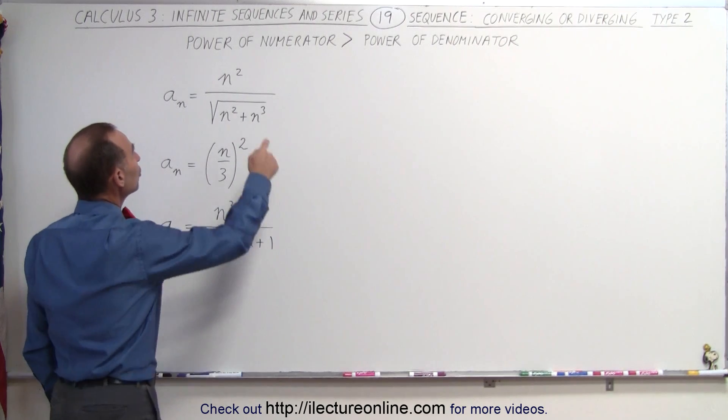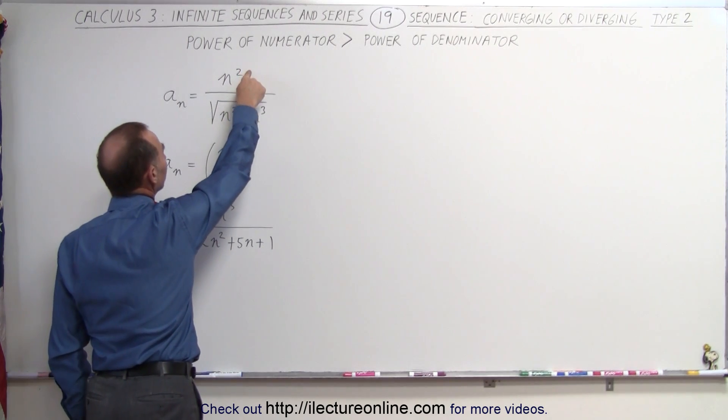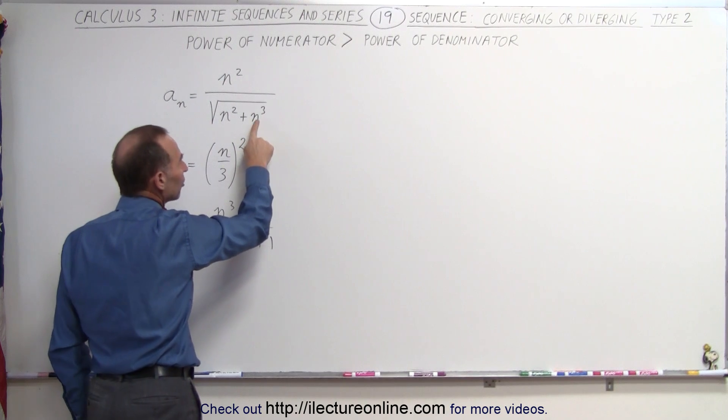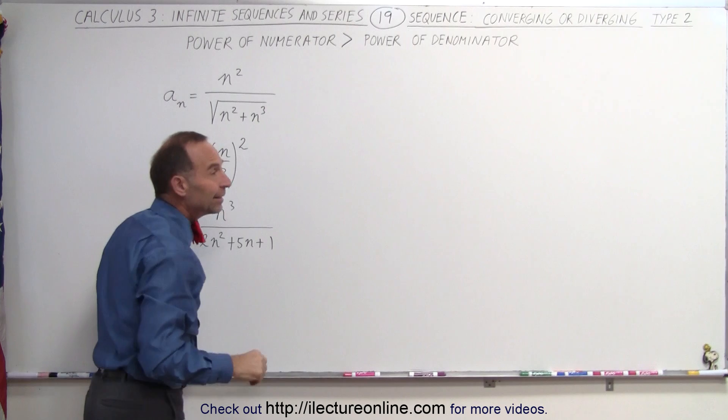For example, here in the numerator we have n squared, and even though apparently in the denominator we have n cubed, this is also underneath the radical.